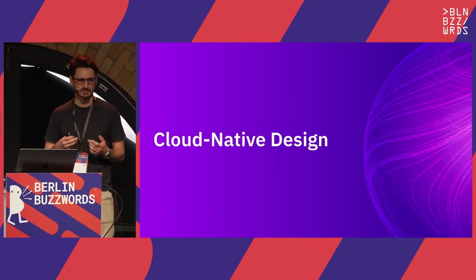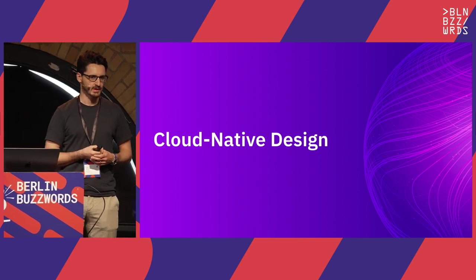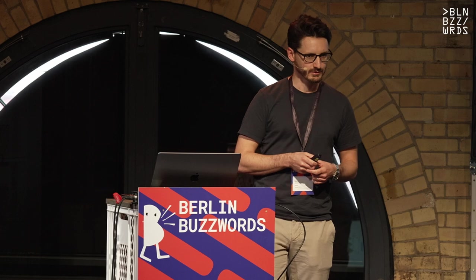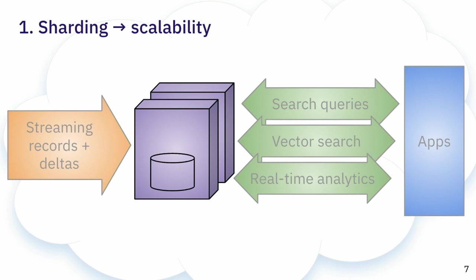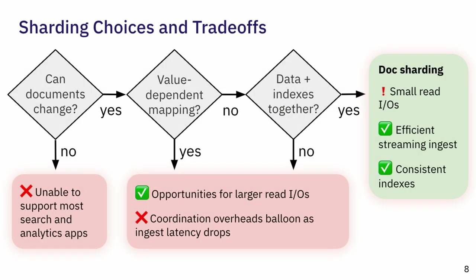The first part of my talk will explore cloud-native design — how do we build a stateful system that takes full advantage of running in the cloud? The first decision we have to make is supporting data that doesn't fit in a single machine, so we need sharding: mapping data partitions onto nodes. The first key question is whether your documents are mutable or immutable.